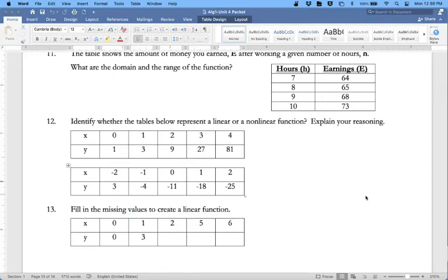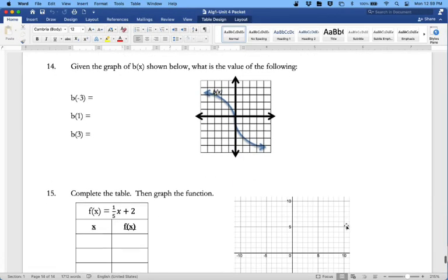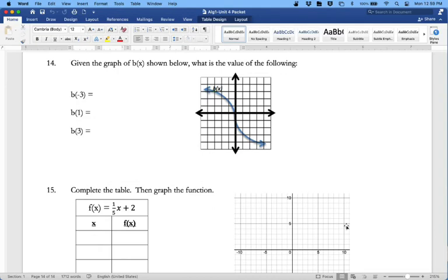And the final one. Go to the top: given the graph of this function, what is the value of the following? b of negative 3—well that means when x is negative 3, what is the y value? When x is negative 3, my y value is right here at this point—you should put it at 3. If x is 1, what's the y value? When x is 1, I'm down here at this point—looks like I'm at negative 3. And when x is 3, what's the y value? When x is 3, I'm down here at what is that, negative 4.